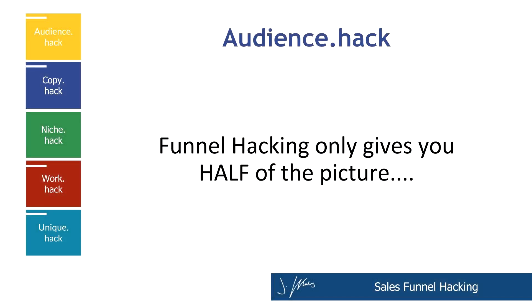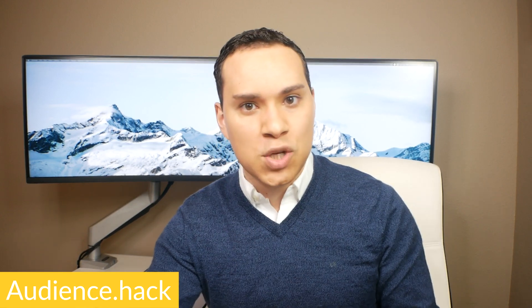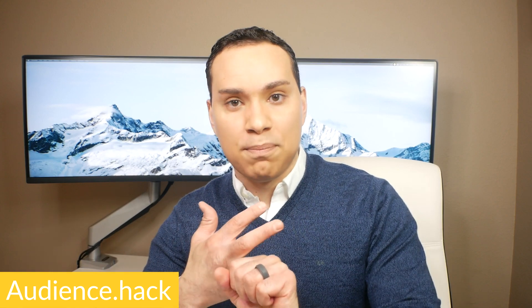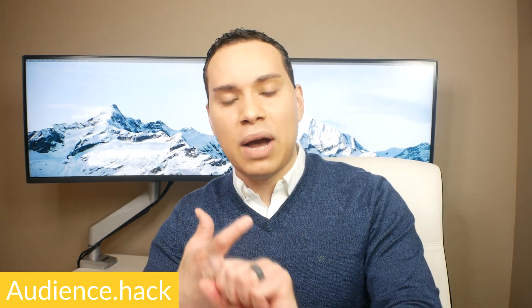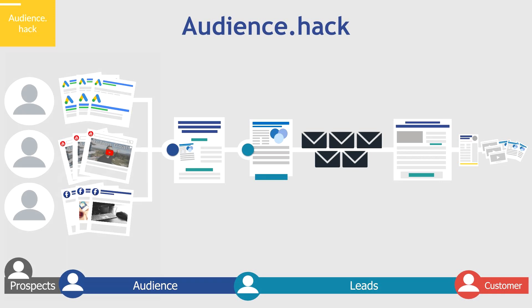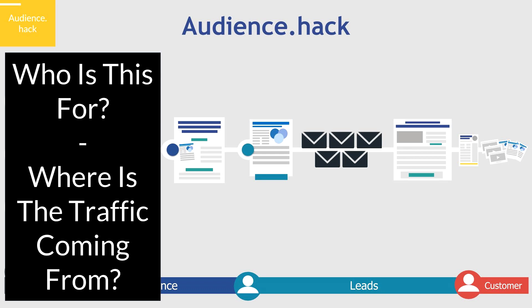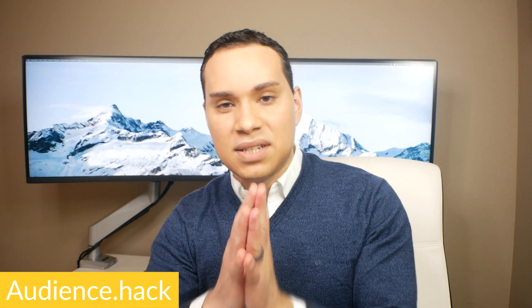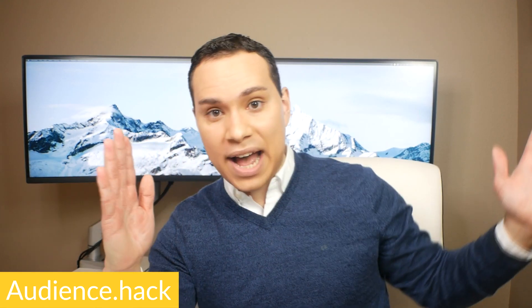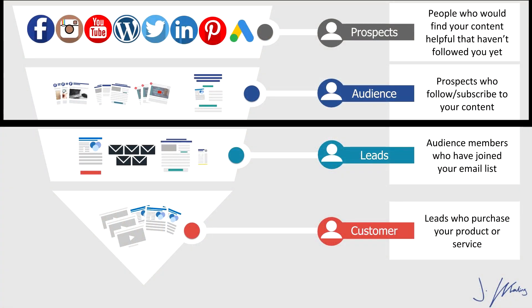The first big problem with funnel hacking is it only gives you half of the picture, and this is going to be a common trend throughout these five. That is audience. You don't know who the funnel is specifically designed for unless you have some inside track on their brand strategy. You won't know what channels your competitors are driving traffic through, how qualified that traffic is, how warm or cold it is, or their content and remarketing strategy. Typically you're only going to see the landing page onwards — their upsell and downsell sequences, their emails. But we don't know what type of people are being driven to this landing page.